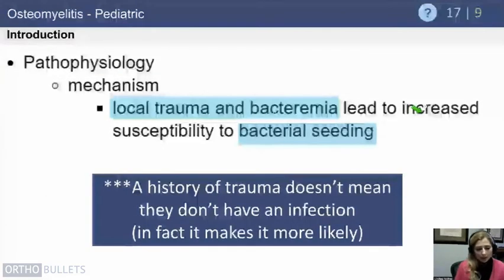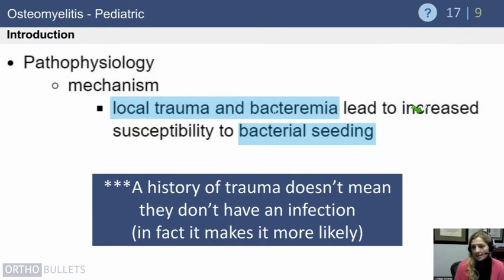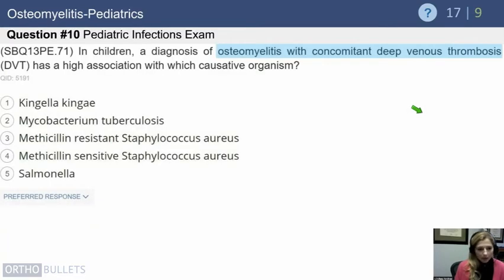The mechanism is typically that some local trauma creates a small hematoma, which sets up an opportunity for the bacteremia we all have flowing through us to develop into a more significant infection. If you remember nothing else from this webinar: a history of trauma does not mean there isn't also an infection — in fact it makes it more likely. If you see somebody with a buckle fracture who is immobilized but still in atypical pain, keep your radar up for infection.